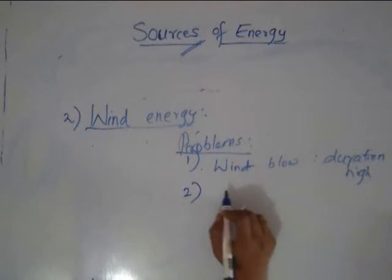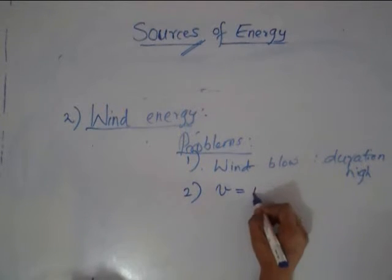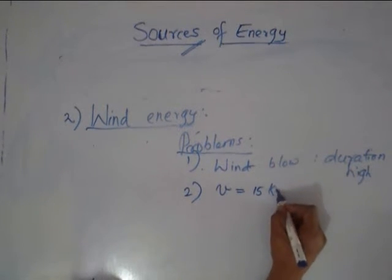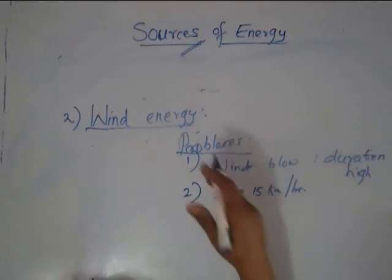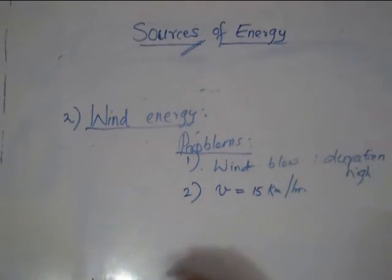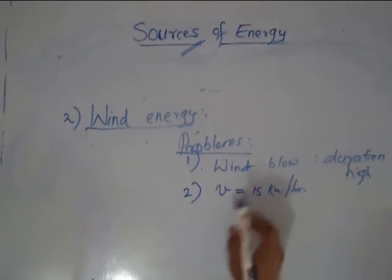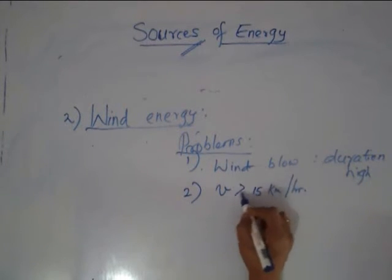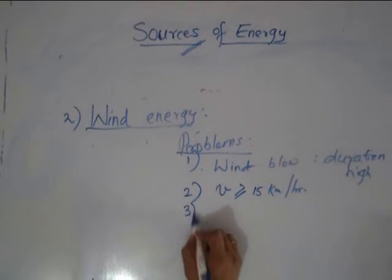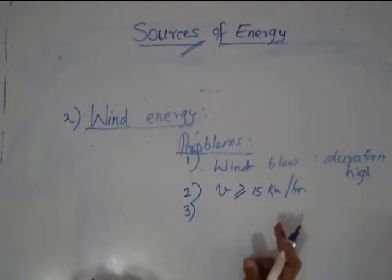Not only that, the velocity of the wind has to be at least 15 kilometers per hour. A gentle wind is not going to rotate the dynamo shaft well enough to produce an appreciable amount of energy. So velocity has to be greater than or equal to 15 kilometers per hour to have a reasonable kind of electricity production.